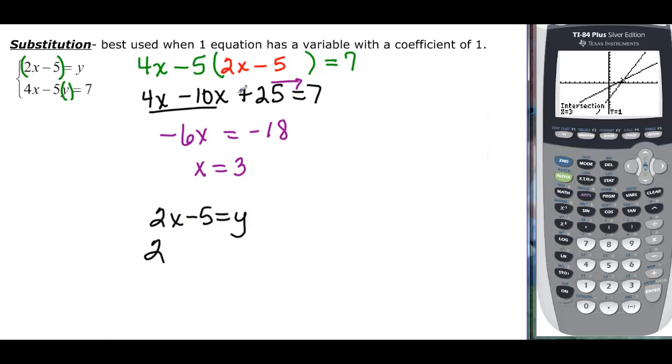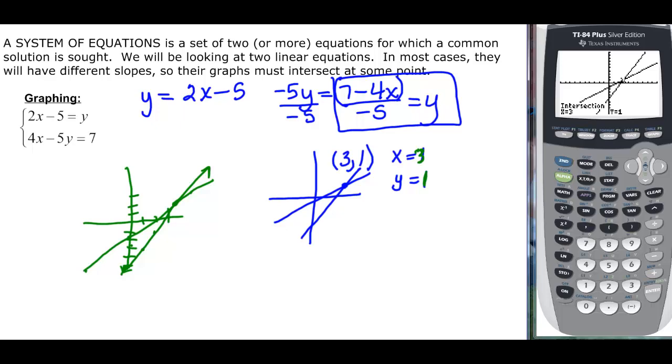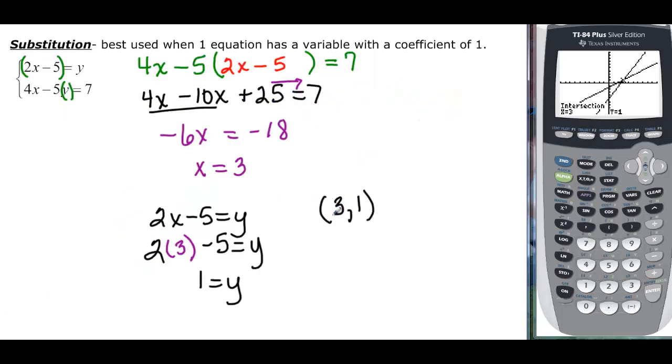Then if I plug that back into my original equation, which was 2x minus 5 equals y, I have 2 times my x which is 3 minus 5 equals y, so 6 minus 5 would be 1. If you'll notice, this is the exact same problem that we had before—same system, we just solved it two different ways and got the same answer of x equals 3, y equals 1.